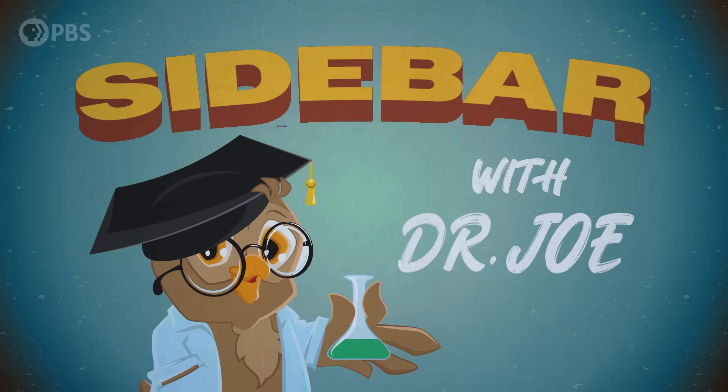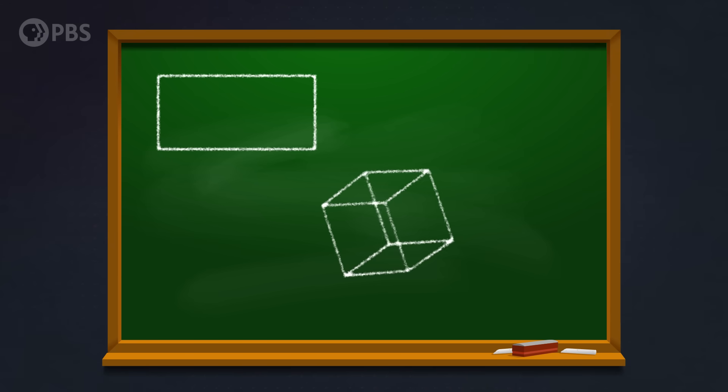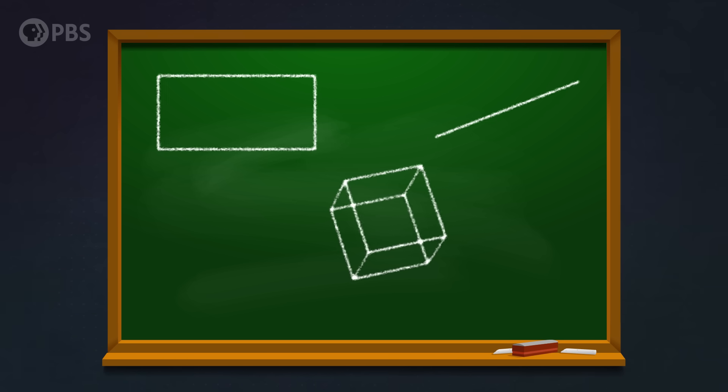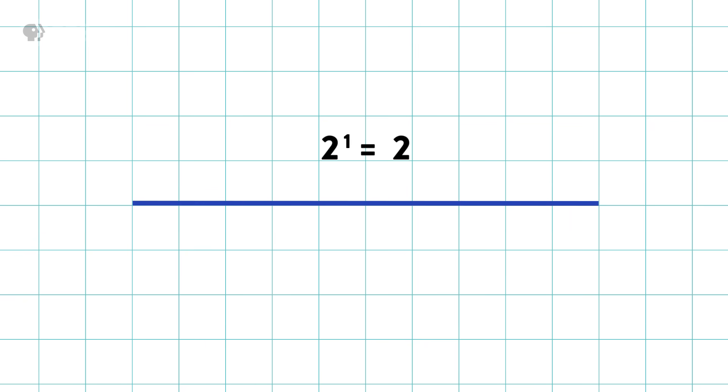Mathematician Benoit Mandelbrot named these self-repeating shapes fractals, because they exist sort of in between dimensions, or in fractured dimensions. Let's take a quick sidebar to talk about how the way that mathematicians use a word isn't always the same as how you and I use a word. You and I think of dimensions as the three that we live in, or the two that exist on paper, or even the one dimension of a line. What Mandelbrot meant by dimension has to do with how different shapes fill space as they get bigger or smaller. You can double the length of this line and you get twice as much line — another way of saying that is you scale it up by 2 to the power of 1.